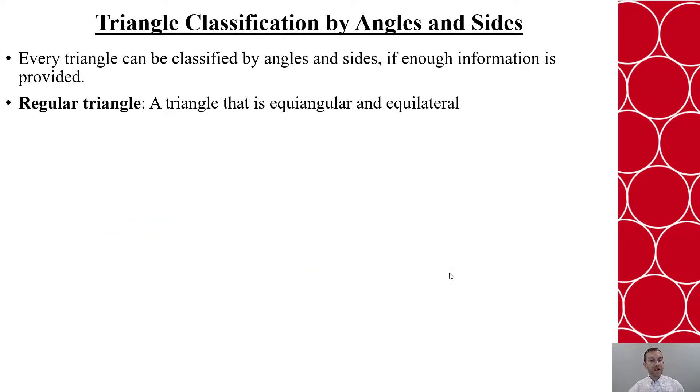So when we classify, we want to try to classify not just by angles, but by sides and angles, if enough information is provided. And when this happens, you'll also get the regular triangle, which we've talked about before. And that means that it is both equiangular and equilateral.